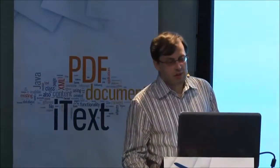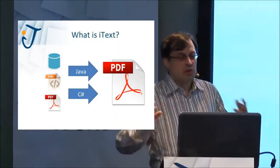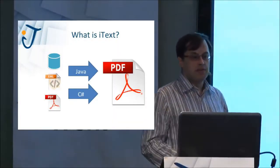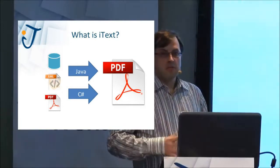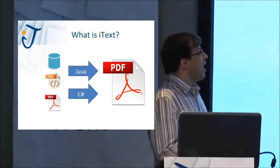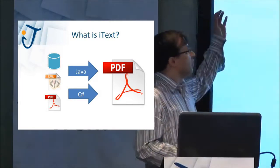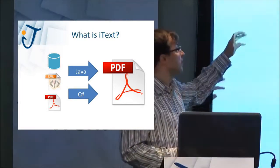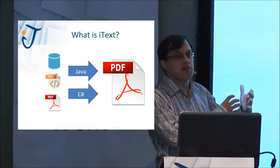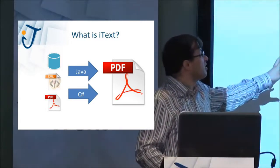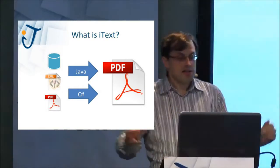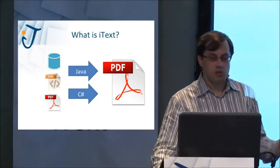For those who don't know what iText is: iText is all about creating PDFs, not manually, but through a program we've written, either in Java or C Sharp. We use as input data from a database or XML, or we use an existing PDF and we stamp stuff on it, or we merge it with database data. That's what iText is about in one slide.